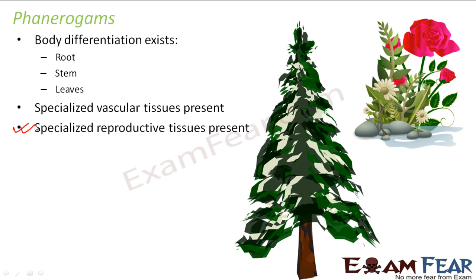Till now, we were seeing that the reproductive system was hidden. We were not able to see the reproductive structure of the plant — it was hidden somewhere in the plant. But now we have specialized reproductive tissues which are visible, so it is no more hidden. Examples of such plants are all the flowering plants which we see — we can actually see the flower, and the flower is the reproductive part of the plant.